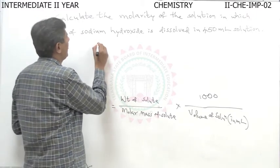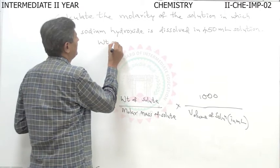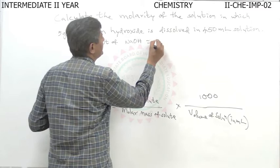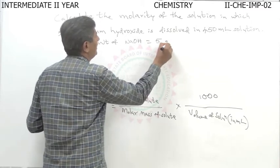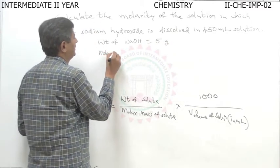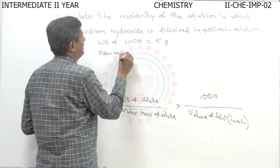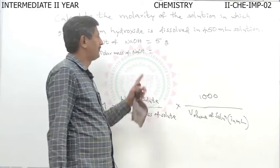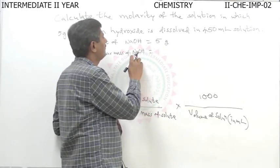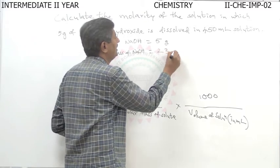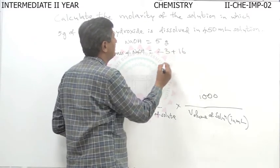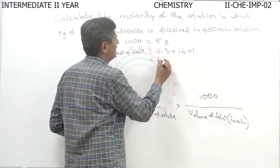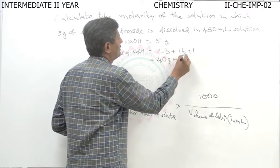In this problem, the weight of sodium hydroxide is given as 5 grams. The molar mass of sodium hydroxide can be calculated: the atomic weight of sodium is 23, plus oxygen is 16, plus hydrogen is 1. So this comes as 40 grams per mole.